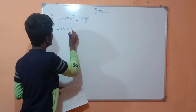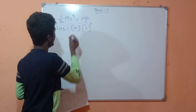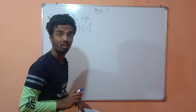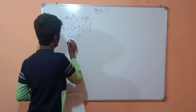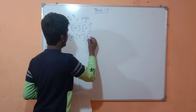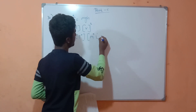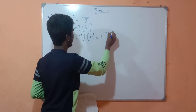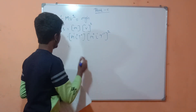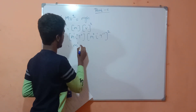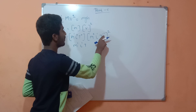Let us consider the LHS first. LHS = m × v². The dimensional formula for mass m is M¹L⁰T⁰. For velocity, it is M⁰L¹T⁻¹, and we have it squared. Adding the exponents: M¹⁺⁰ = M¹, L⁰⁺¹ = L¹, and T⁰ × T⁻² — wait, why minus 2?